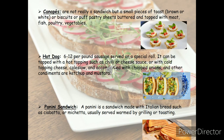Canapés are not actually sandwiches, but because bread is used for making them they are included in this category. For hot dogs, small bun rolls are preferred and the filling is put inside, generally accompanied with condiments like ketchup and mustard. The panini sandwich is made from Italian bread such as ciabatta or michetta and is usually served warmed by grilling or toasting. In a panini sandwich you will generally see the marks of the grill, as visible on the picture.